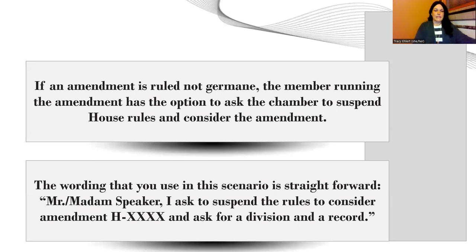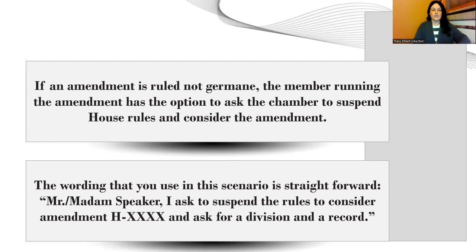If an amendment is ruled not germane, then the member running the amendment has the option to ask the chair to suspend the House Rules and consider them. So they would say something like, 'Mr. Speaker' or 'Madam Speaker, I ask to suspend the rules to consider amendment A' — whatever the number is — 'and I request a division of record.' The division of record means we would press for voting, just like we're voting on a bill, which shows who approved or disapproved that.